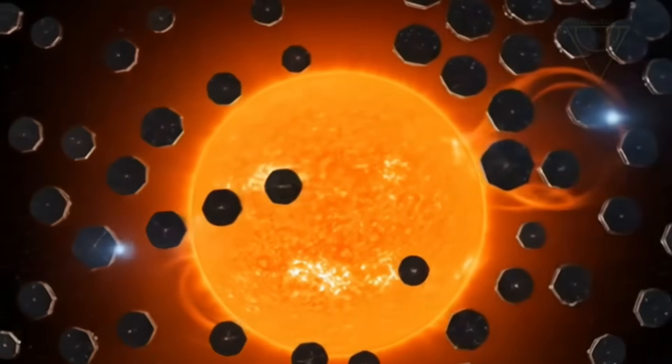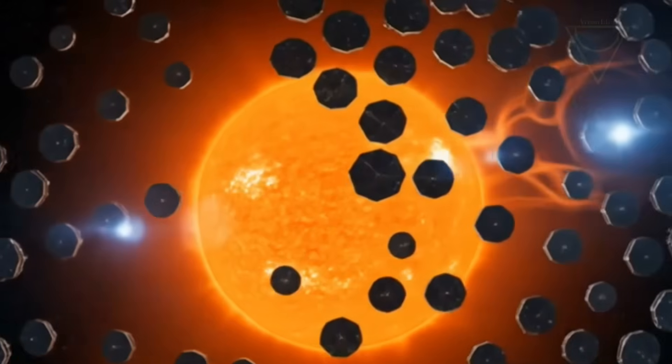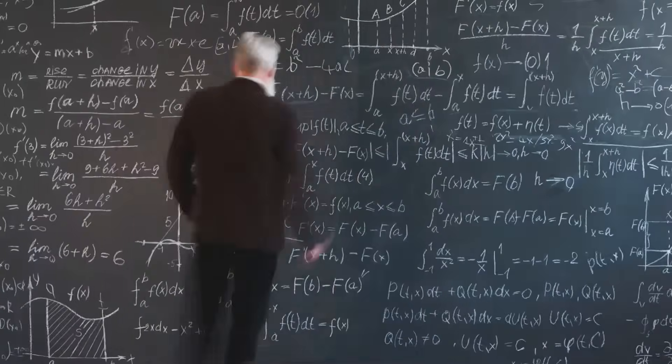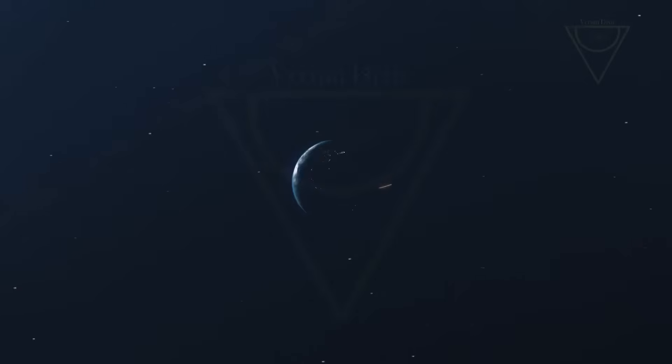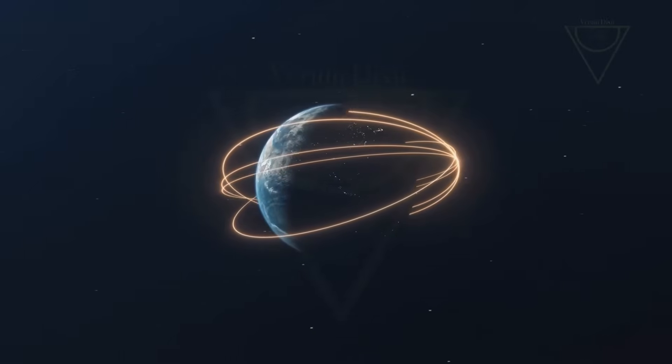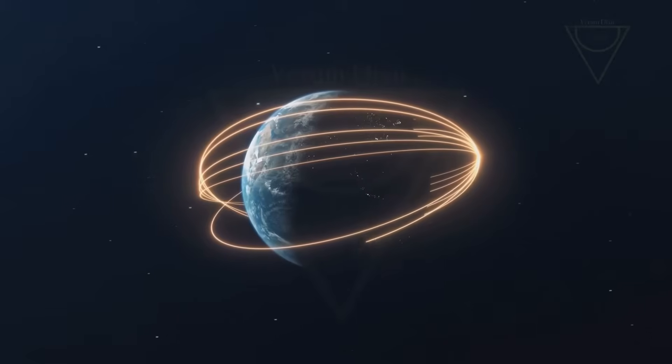When we talk about alien megastructures, the most famous idea is the Dyson Sphere, first proposed by Freeman Dyson in 1960. As civilizations advance, their energy needs outgrow their planet, so they might build a structure to capture nearly all the energy from their star.